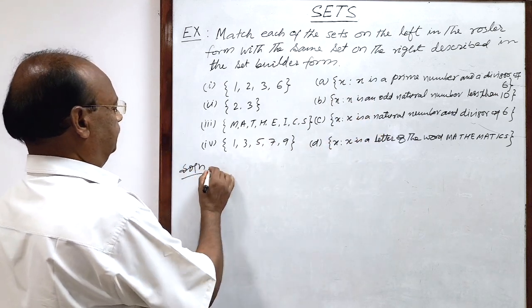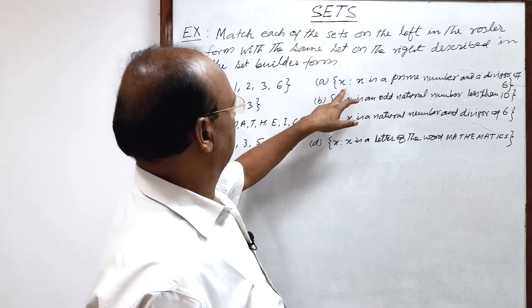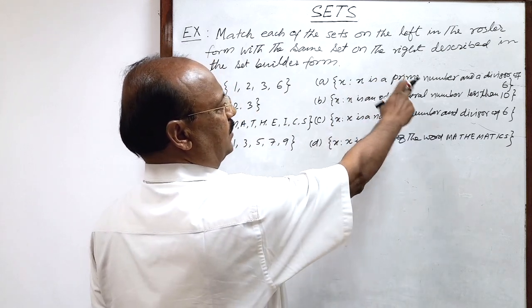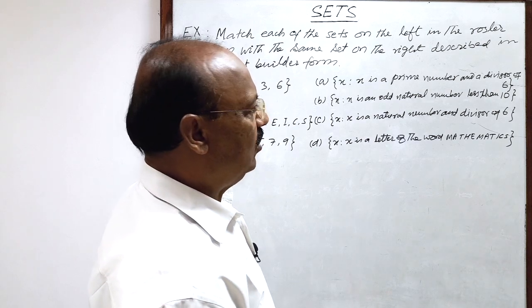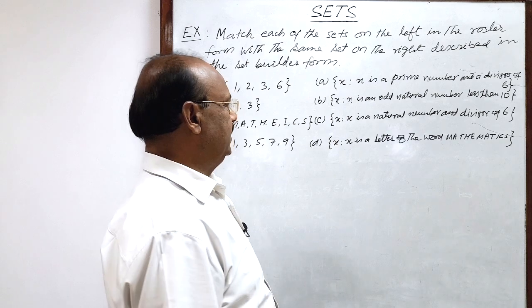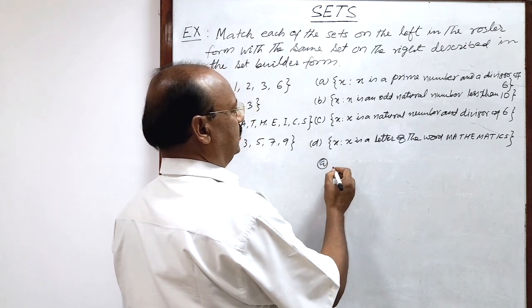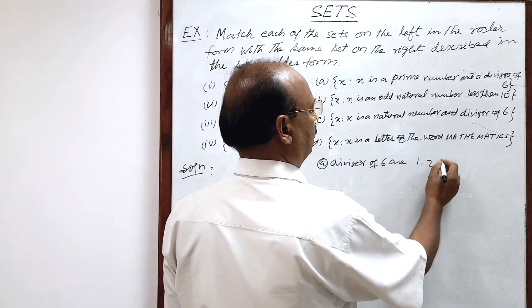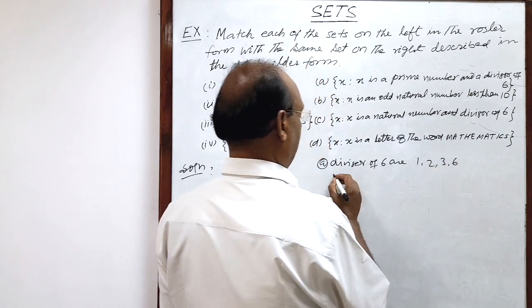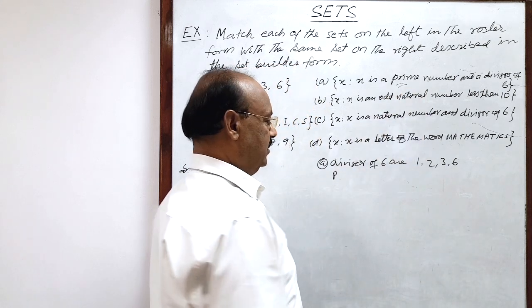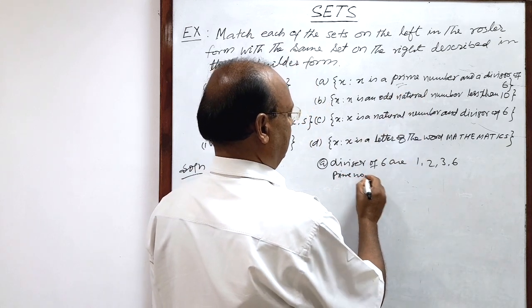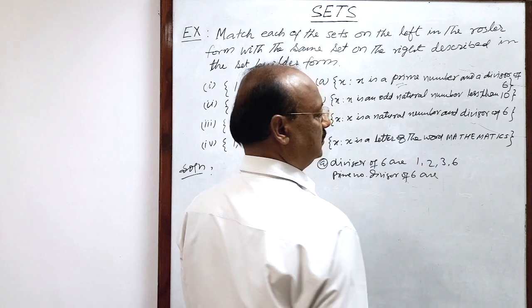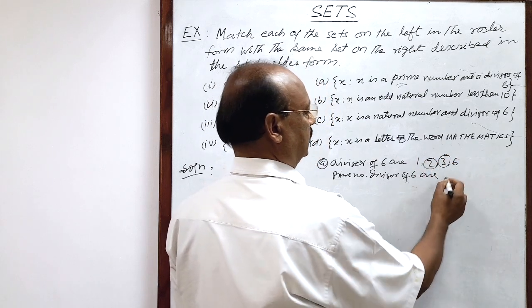Let us see the solution here. This is 1, 2, 3, 6 and here first is x is a prime number and a divisor of 6. So you know divisor of 6, let us write here. Divisor of 6 are 1, 2, 3 and 6, but it is written here prime number divisor of 6. So prime number which are divisor of 6 are only 2 prime numbers are here, 2 and 3.